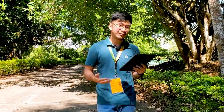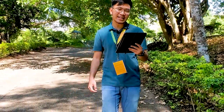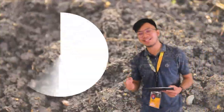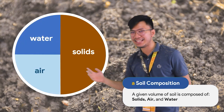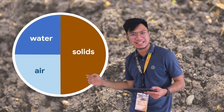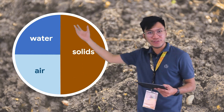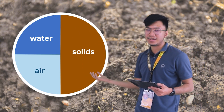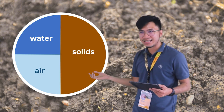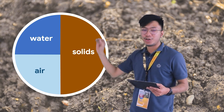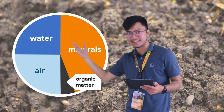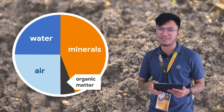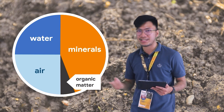We have seven important agricultural soil properties, and if you have taken soil science before, this will be a review. The first is soil composition. Soil is composed of three parts: solid, water, and air. Fifty percent of the soil is composed of water and air, and the other fifty percent is solid. The solid portion can be divided into minerals and organic matter, with minerals making up the majority and organic matter comprising only one to five percent.